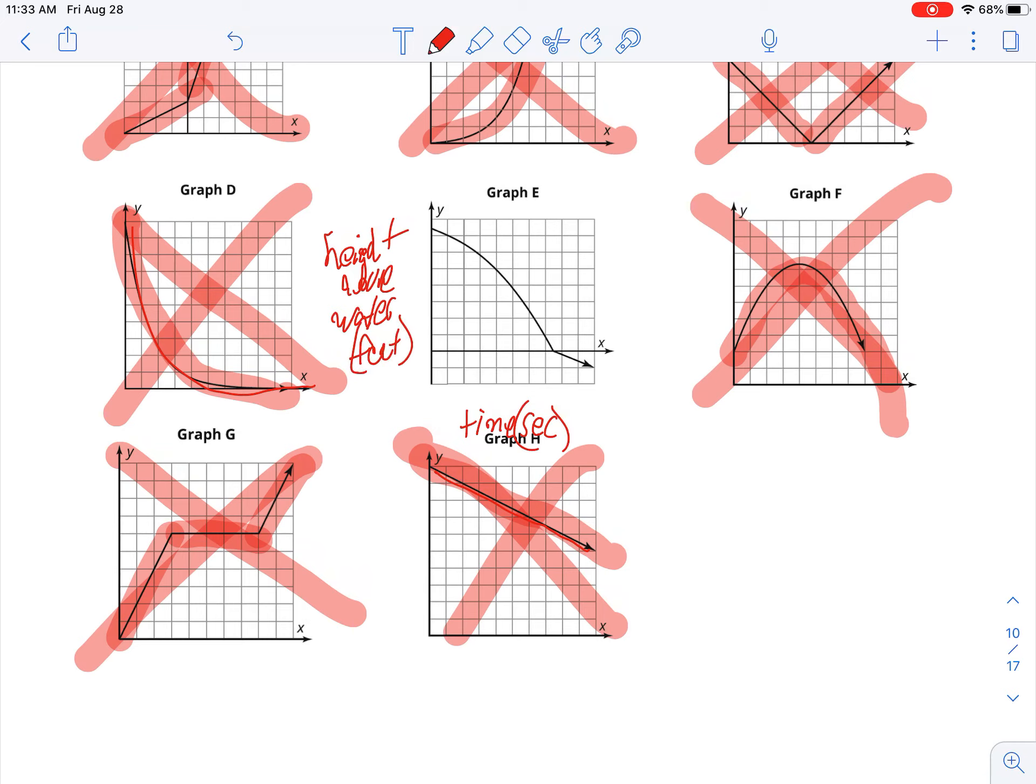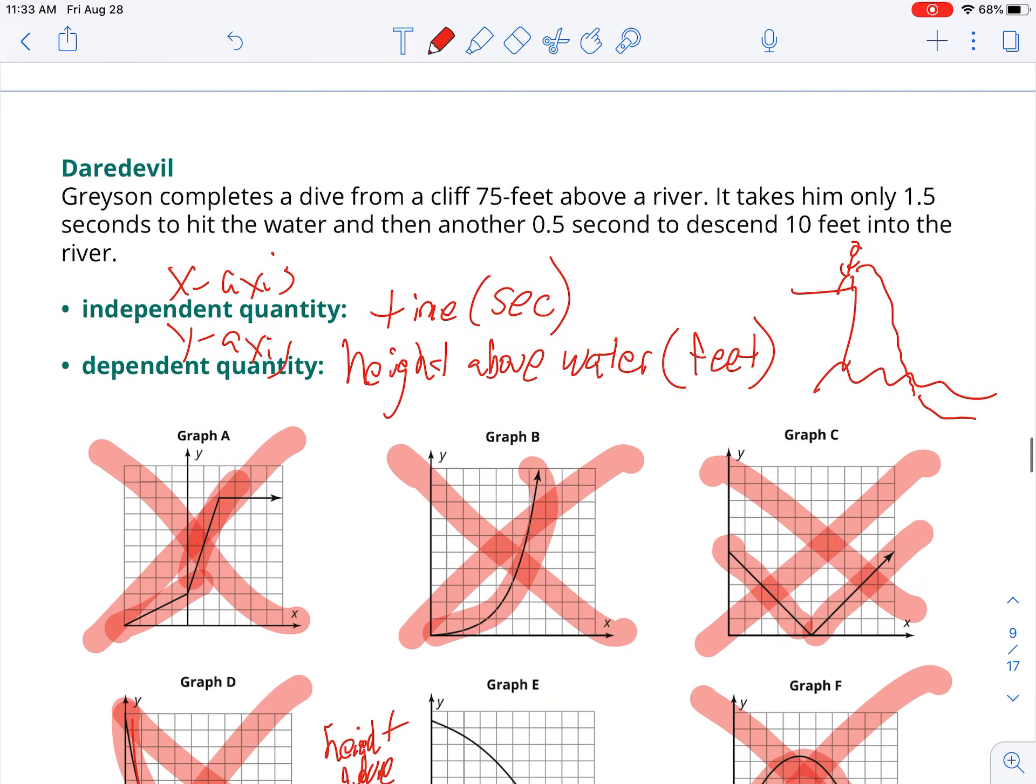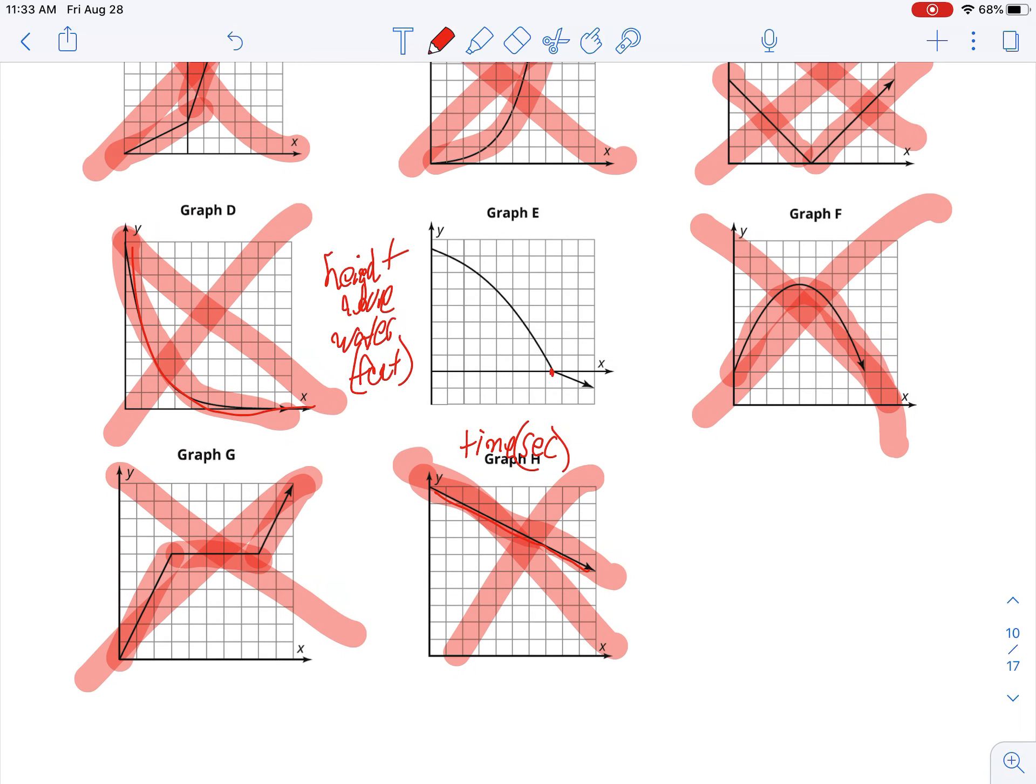We're almost done now. We chose our graph. We labeled the axes. We need to give a scale. It says he hits the water in one and a half seconds. So here's where he hits the water at one and a half seconds. So you're not going to make your scale go by ones, because if it is, he's not going to hit the water at one and a half. That doesn't make sense with the problem. So to fix that, we're going to make our graph go by 0.2. 0.2, 0.4, 0.6, 0.8, 1.0, 1.2, 1.4, 1.6, 1.8. By doing that, we can get into that one and a half that's shown on the graph.